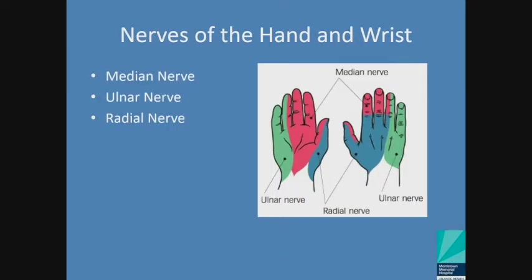Nerves of the hand and wrist — a very complex topic covered briefly. The median nerve governs sensation to your palm, thumb, index, long, and half of your ring finger. We talk about carpal tunnel syndrome because the median nerve is compressed at the wrist, typically leading to numbness or decreased sensation in the median nerve sensory distribution. The ulnar nerve governs the ulnar aspect of the ring finger and all of the small finger — if that's numb, we're thinking about cubital tunnel syndrome or ulnar nerve compression at the wrist.